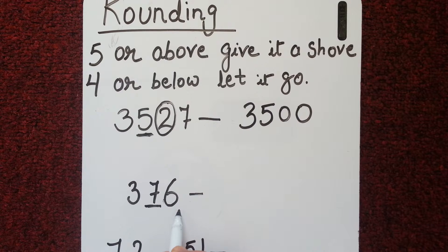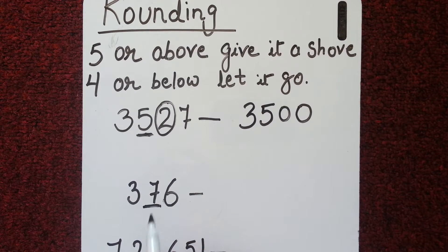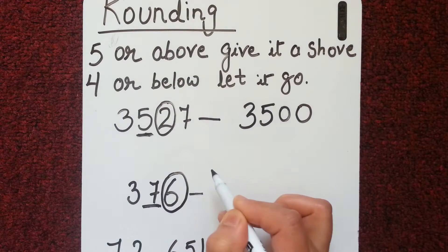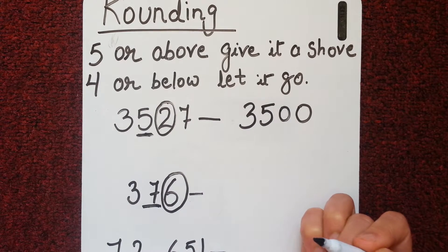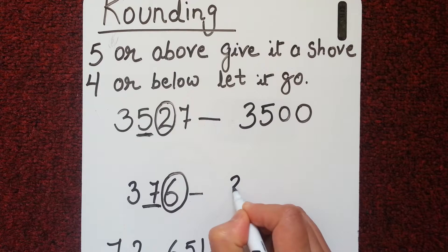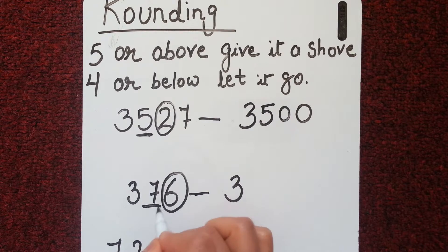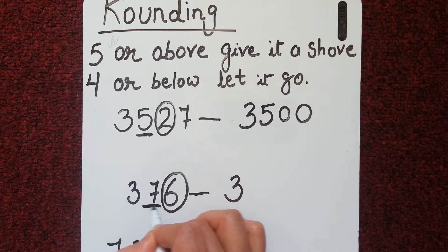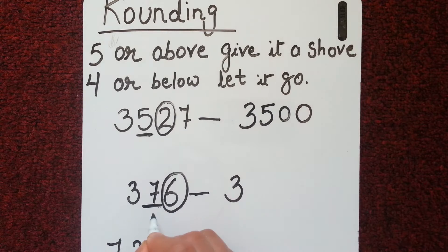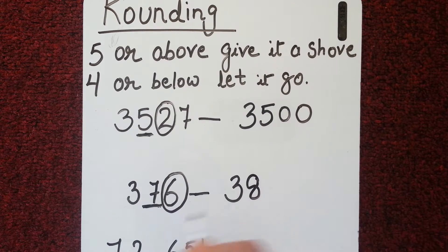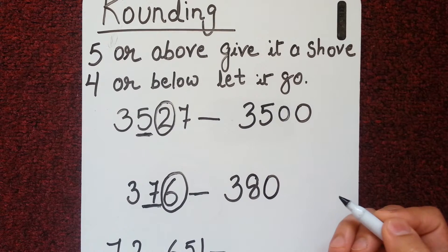Now let's see another example. We have the number 376 and we want to round it to the tens place. The number on the tens place is seven, and the number on the right-hand side of the tens place is six. Six falls in the phrase 'five or above, give it a shove,' so we give the seven a shove — it becomes eight. The result is three hundred and eighty.